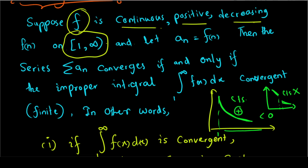We have to get a function, and we can get a_n as f(n). This series a_n converges if and only if the corresponding improper integral converges.